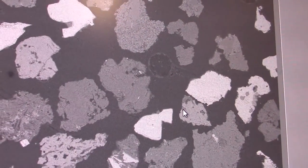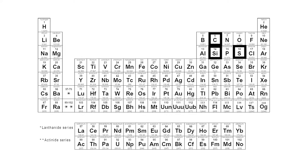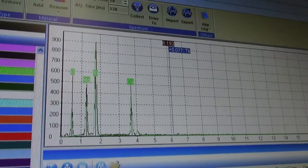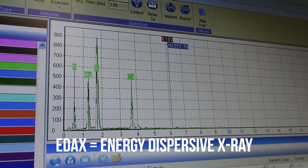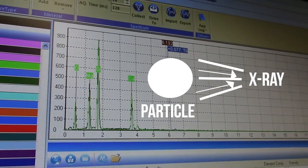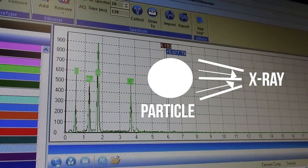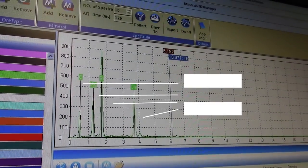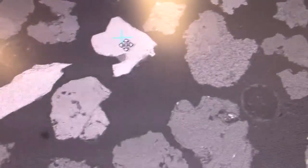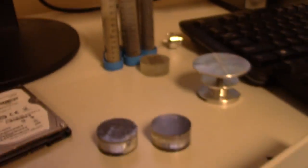This is the EDAX, which is energy dispersive x-ray. It's x-rays hitting that particle, bouncing back, and causing spikes for certain elements contained in it. We selected another particle from the sample.